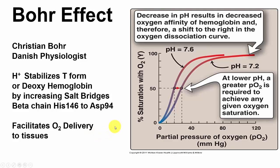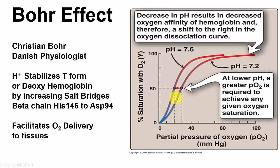Metabolizing tissues such as muscle have lactic acid and other acid metabolites, which lowers the pH, producing more protons. Those protons stabilize the deoxy form and aid in the delivery of oxygen. Here you see two oxygen binding curves showing percent saturation on the y-axis and partial pressure of O2 on the x-axis.